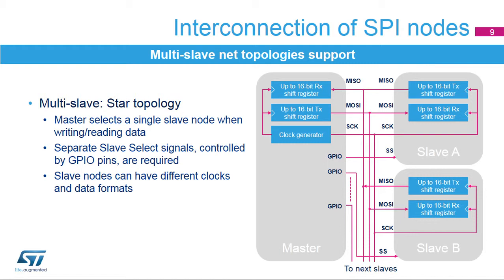When the SPI network includes more than one slave, a star topology is commonly used. The master communicates with one slave at a time, selected by its slave select input. In this topology, a separate slave select signal from the master has to be provided to each slave node, so the master can select which slave to communicate with via a dedicated GPIO pin. Thanks to separate slave select signals, SPI data and clock format can be adapted for each slave, if the multiple slave nodes do not have a common configuration.